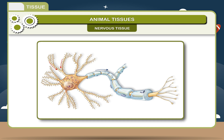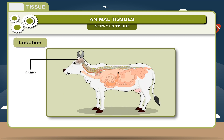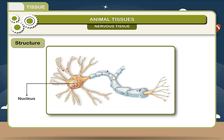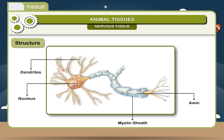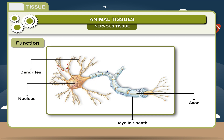Nervous Tissue: Nervous tissue is composed of nerve cells called neurons. The main body of a neuron having a nucleus is the cell body, with branching dendrites and a long cytoplasmic structure called an axon. The dendrites connect one neuron to another. The axon transmits impulses to an organ or collects impulses from the sensory organs. Function: They transfer information from one part of the body to another.